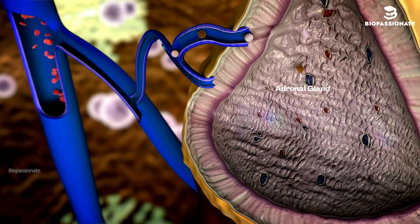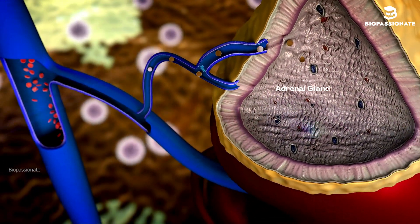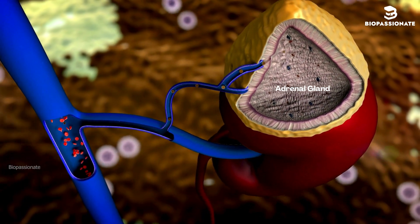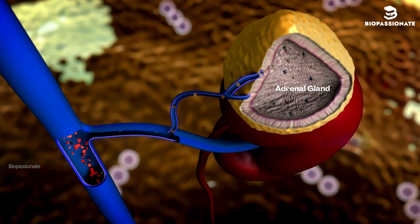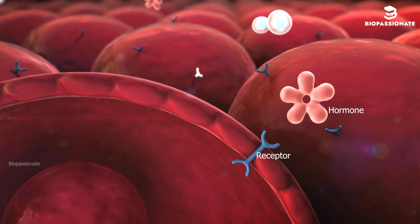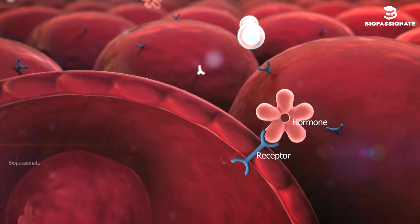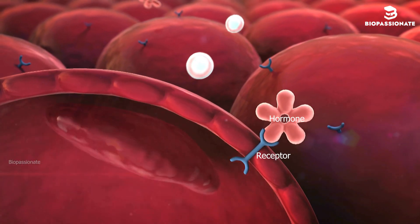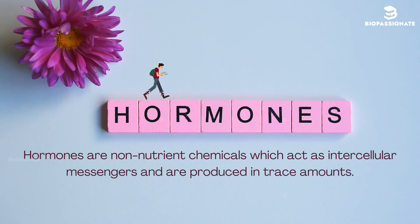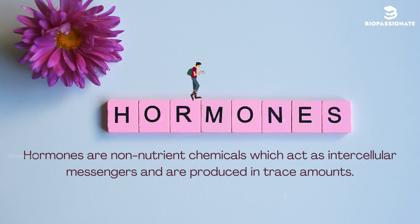Hormones are secreted by endocrine glands and travel through the bloodstream to reach their target cells or organs. Once there, they bind to specific receptors like a key fitting into a lock. Hormones are non-nutrient chemicals which act as intercellular messengers and are produced in trace amounts.